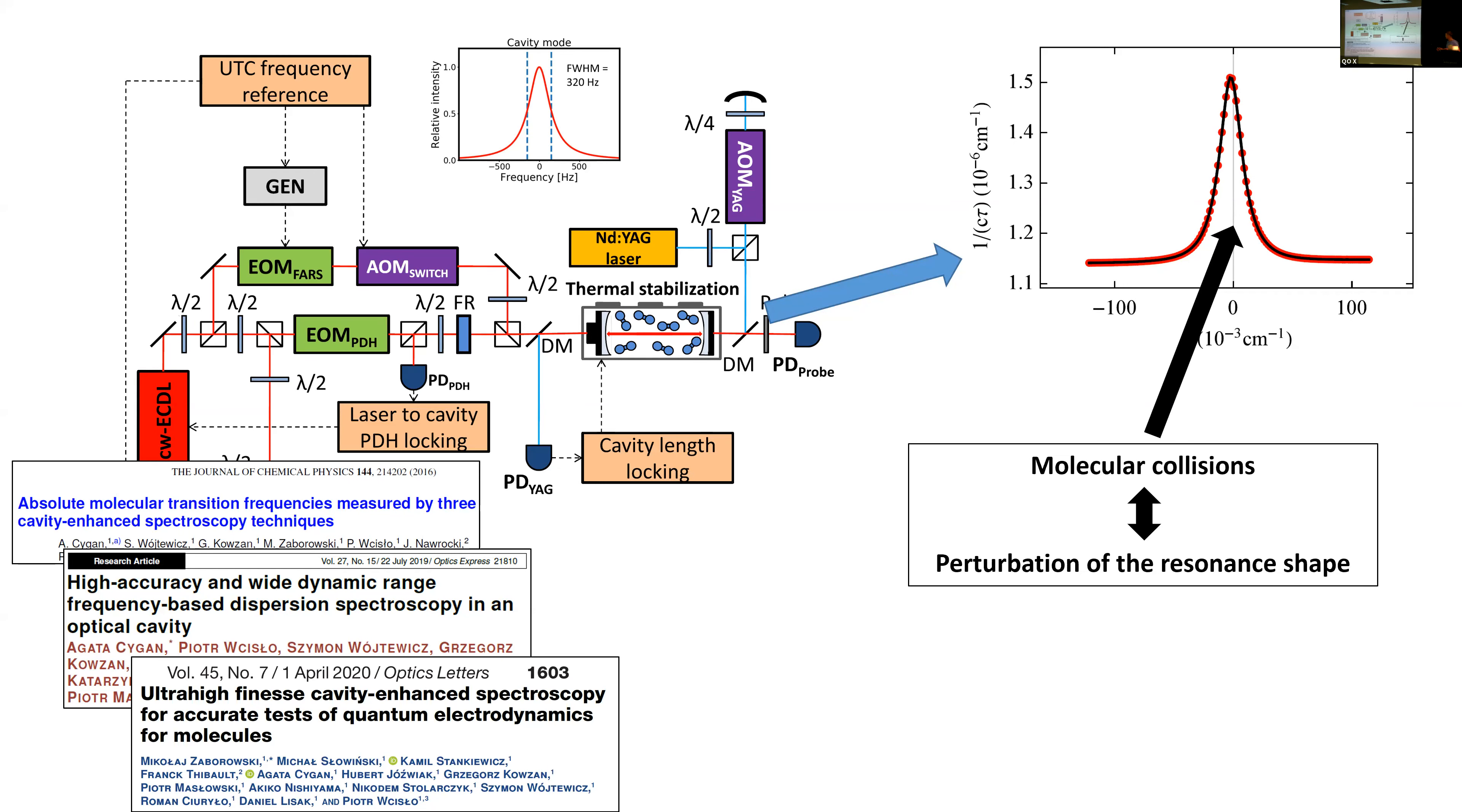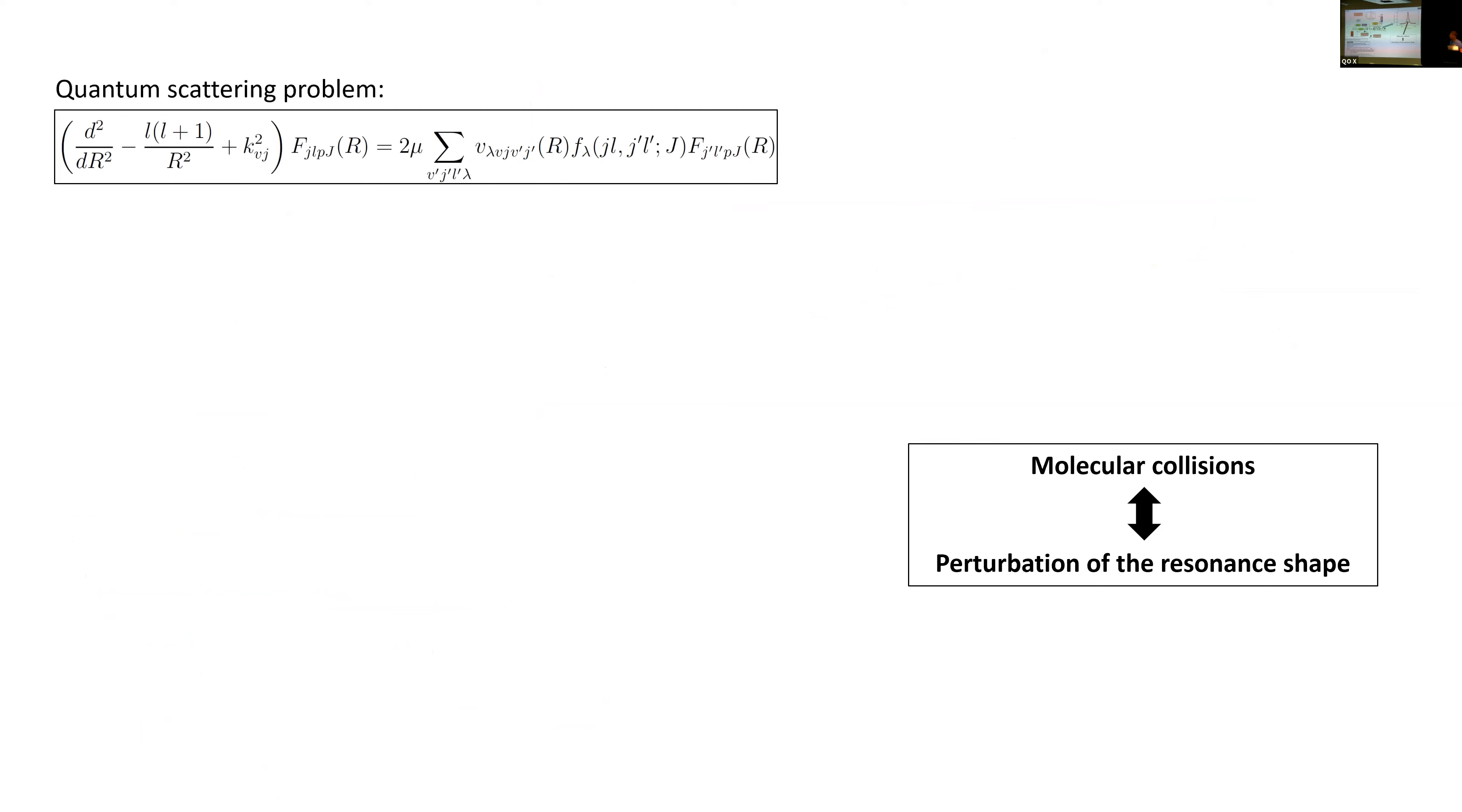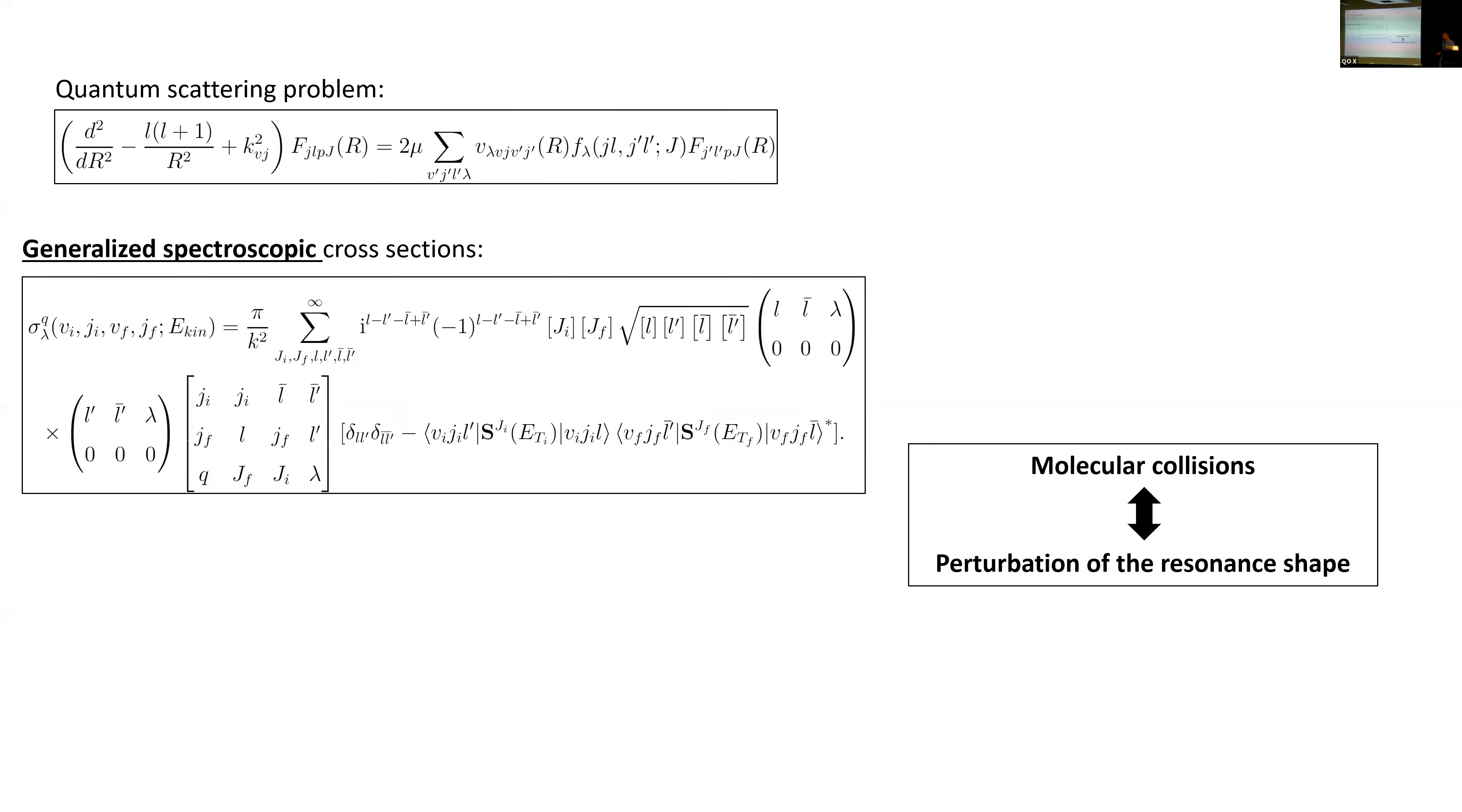From the theory perspective, we start from the standard approach. We consider for a given molecular system a quantum scattering problem. We solve time-independent Schrodinger equation. We determine the scattering S-matrix and here is the difference. What people typically do is they calculate the elastic or inelastic cross-section and determine the scattering amplitude. When we calculate, we calculate a so-called generalized spectroscopic cross-section.